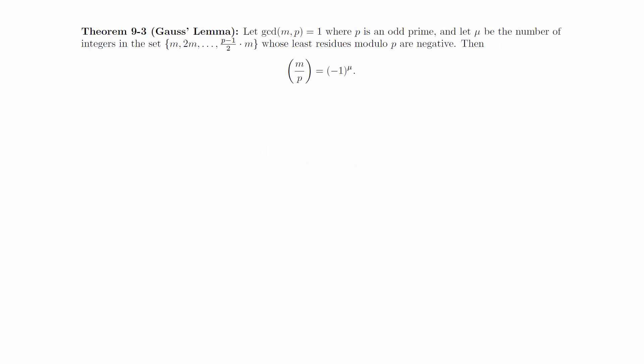Before looking at the formal proof of Gauss's lemma, we're going to look at a numerical example of the idea. Gauss's lemma basically takes the first (p-1)/2 multiples of some integer m, reduces them to the least residues, and then counts the number of negative signs. For example, let m equal 4 and p equal 11. Here are the first 5 multiples of 4.